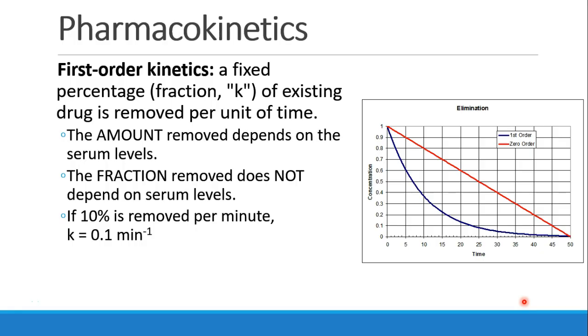Now we're going to talk about kinetics. When we talk about first-order kinetics, we're talking about the idea that a fixed percentage or fraction of existing drug is removed from the bloodstream per unit time. So the amount that's actually removed depends on the current serum level, and it changes depending on the serum level. But the fraction removed, the percentage removed, does not depend on serum levels. It's constant.